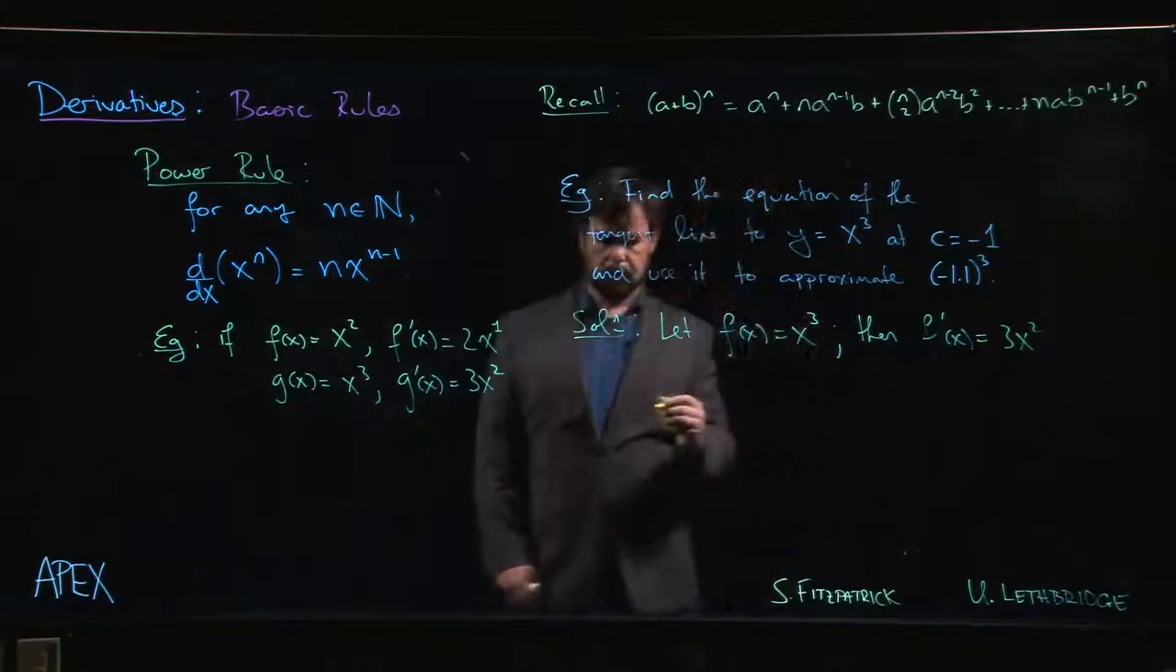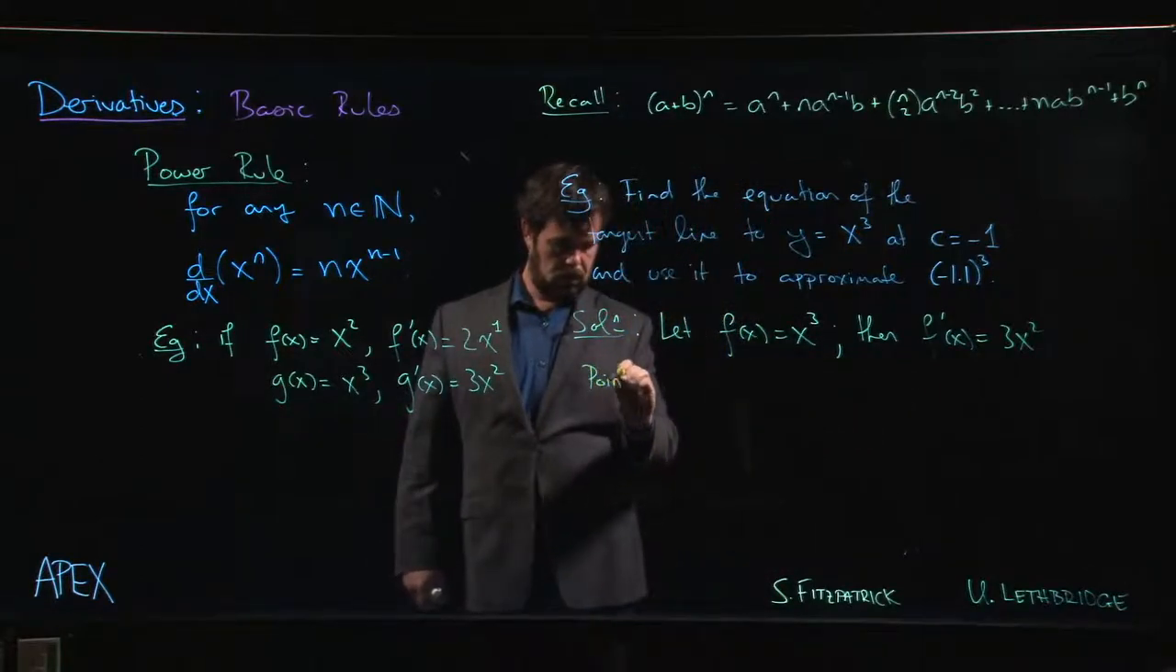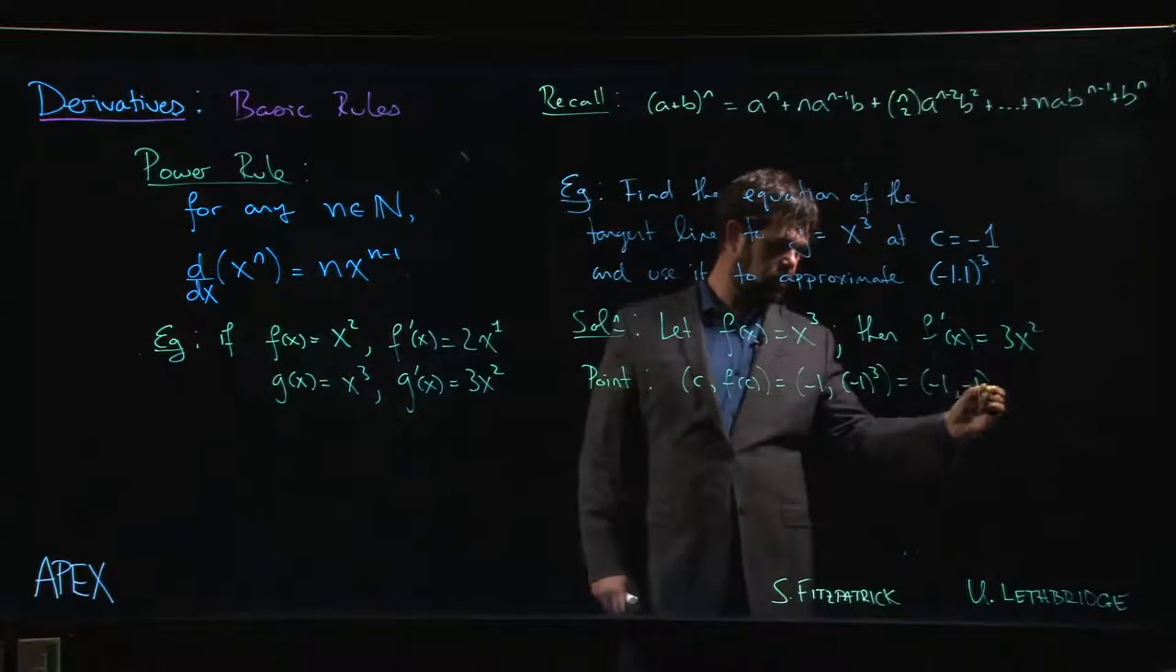If we want the tangent line, then we need a point and we need a slope. The point on the line is going to be (c, f(c)) which is (-1, -1 cubed) which is (-1, -1). The slope is going to be f'(-1) which is 3 times (-1) squared which is 3.